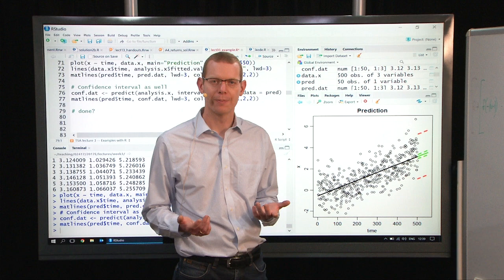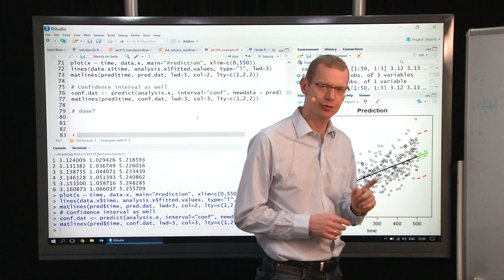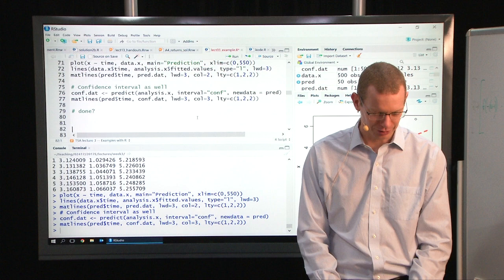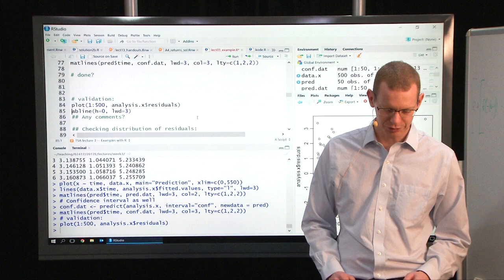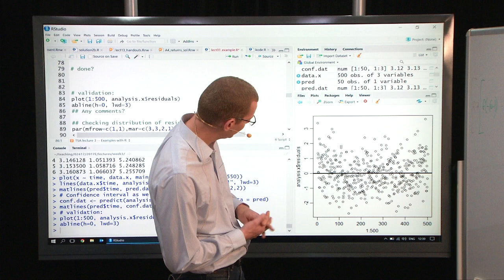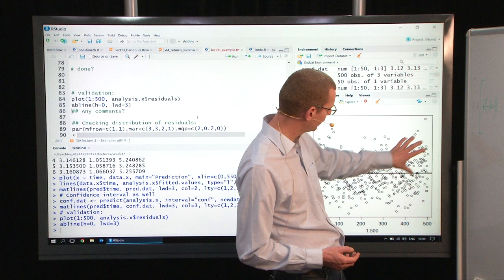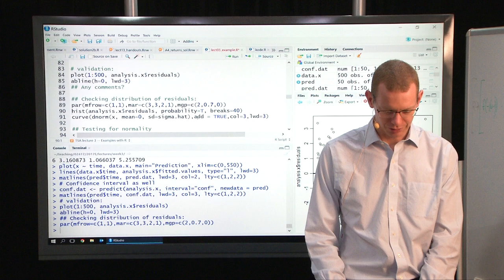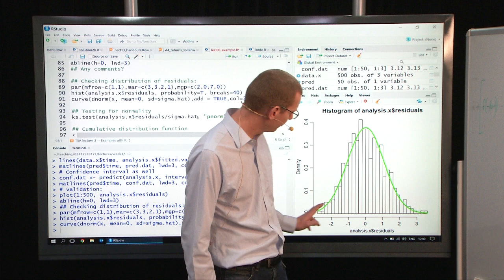Now the question is, are we done with this? The answer to that question is no, we're not quite done, because now we just assumed that the model was perfect, everything was appropriate. But what we should do is to test and look at the assumptions for this model. We should do the validation. Let's first just plot the residuals here. They should have a mean value of zero as a horizontal line. When we look at this, it doesn't look too bad. I mean, I've seen much worse plots than this.